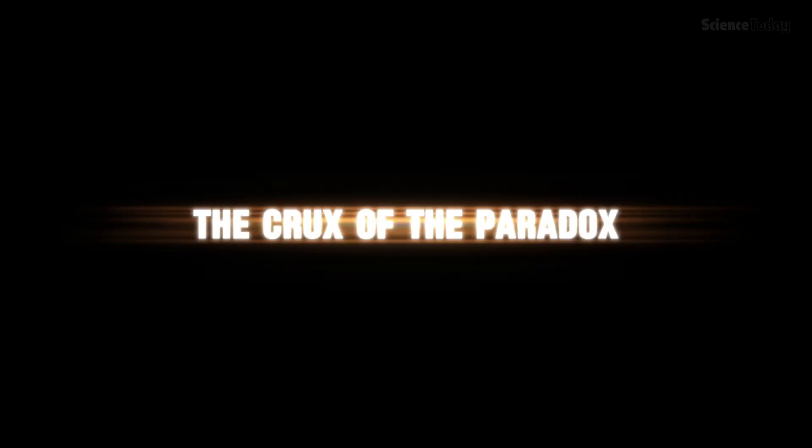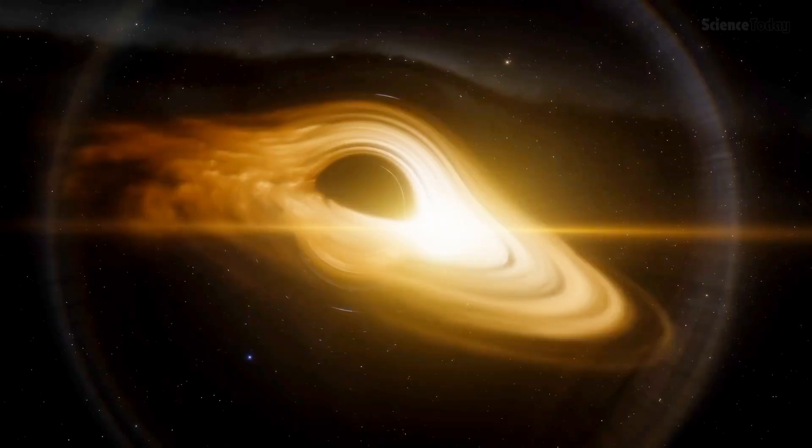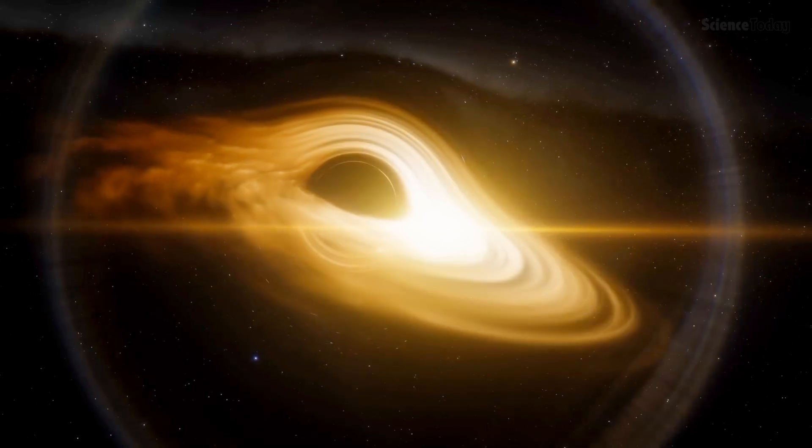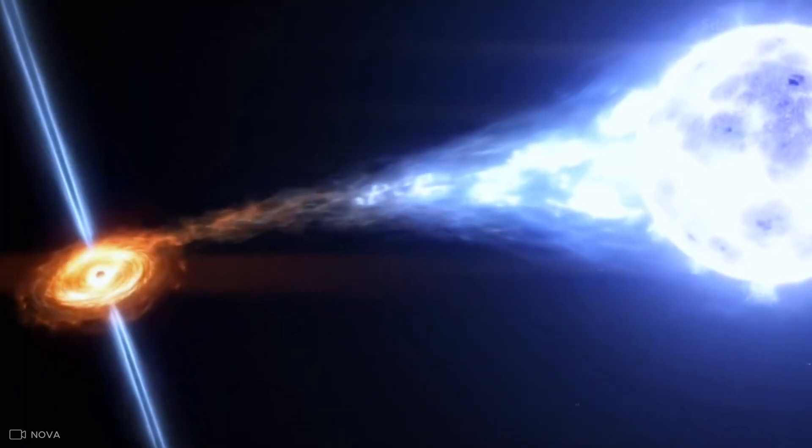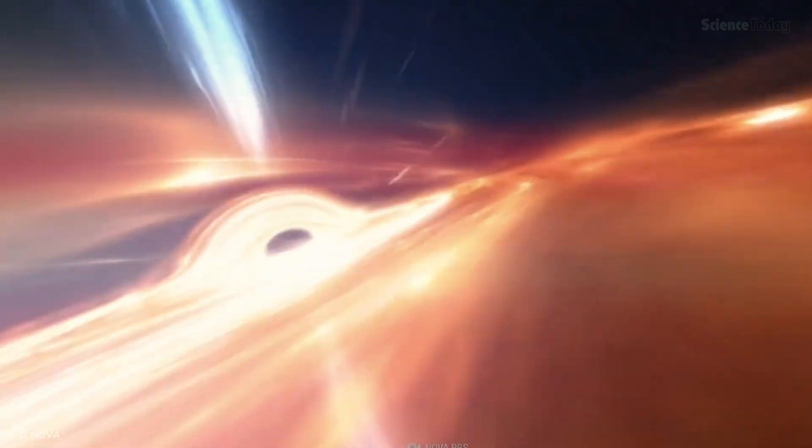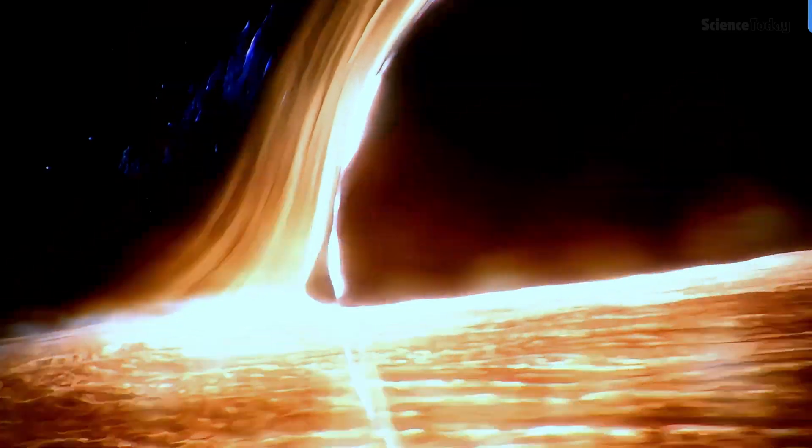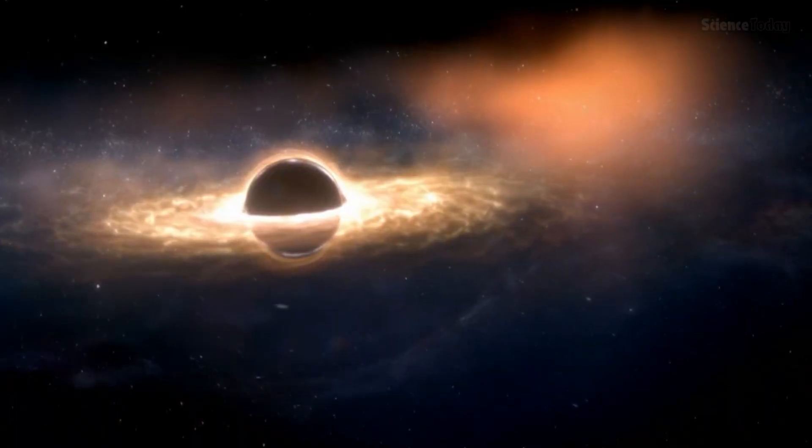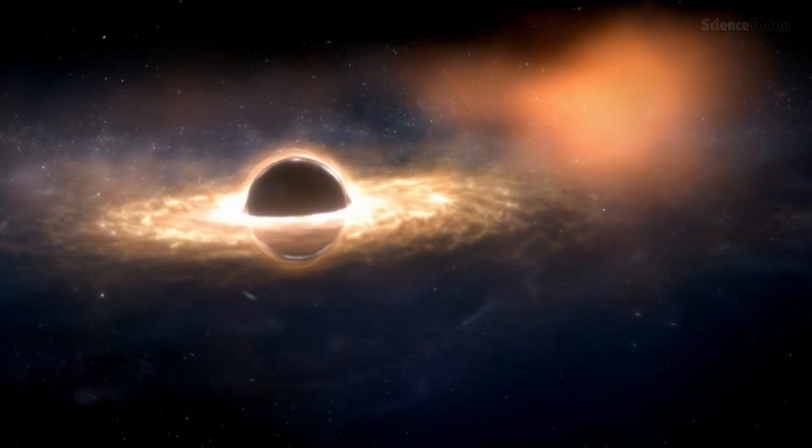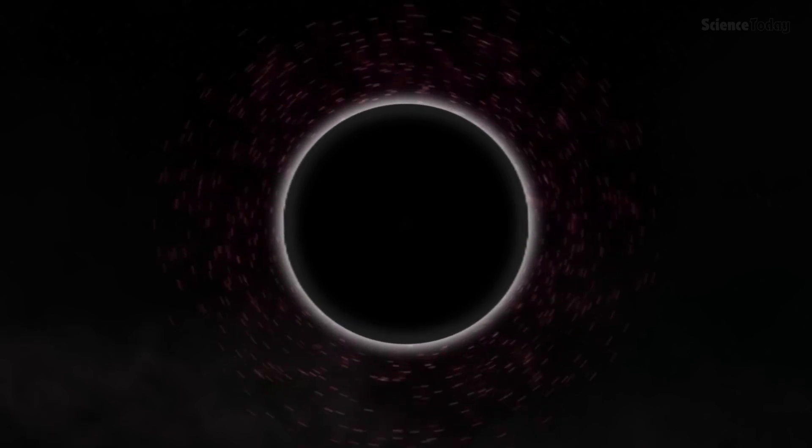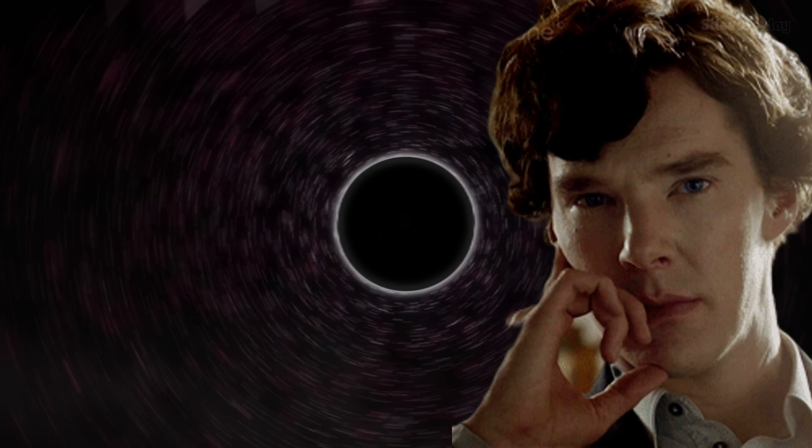This leads us to the crux of the paradox. Black holes challenge this fundamental principle. When something falls into a black hole, all details about its structure, its information, seem to disappear beyond the event horizon. From the outside, the black hole appears to homogenize everything it consumes. But if the black hole eventually evaporates into nothingness, where does that information go?